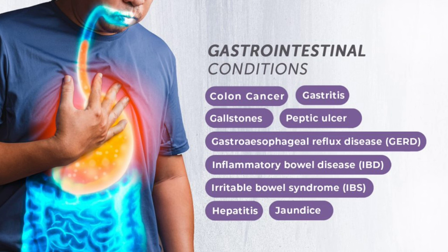Causes of hypokalemia: loop diuretics (furosemide), thiazide diuretics (bendroflumethiazide), vomiting, diarrhea, villous adenoma, renal tubular acidosis, Cushing's syndrome, and Conn's disease. Causes of hyperkalemia: ACE inhibitors, angiotensin receptor blockers, potassium-sparing diuretics (spironolactone), CKD, and Addison's disease. Note: Cushing's and Conn's cause hypokalemia; Addison's causes hyperkalemia.